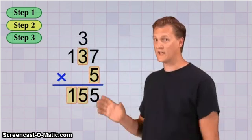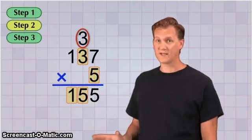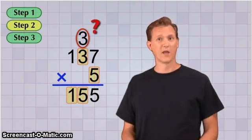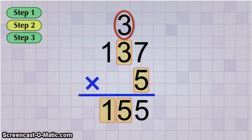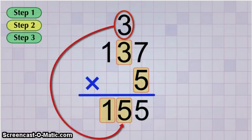But wait a second, there's that 3 we carried up to the top from the last answer. What do we do with that? Well, we need to add it to the answer that we just got. That's because that 3 was supposed to go in the tens place of the answer, but just not all by itself.